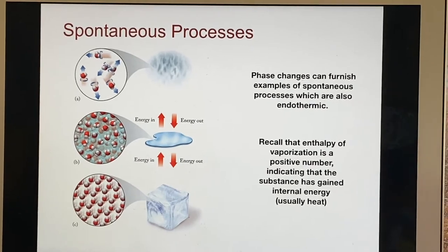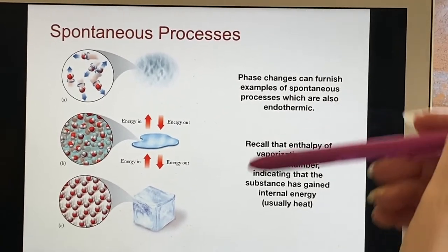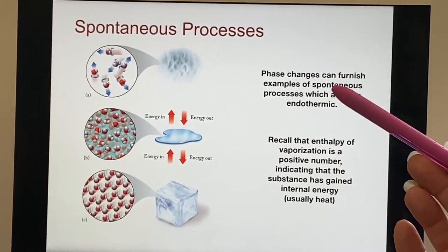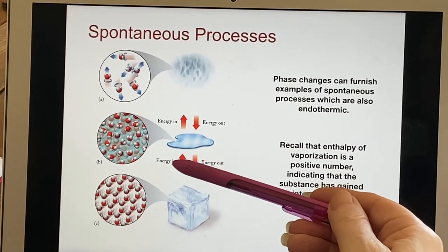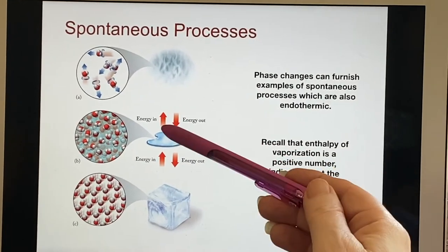Here's some other possible spontaneous processes. Phase changes make great examples. And they, you can see that sometimes they're exothermic and sometimes they're endothermic. Because if you have a phase change, one direction is going to be, let's put more energy in.